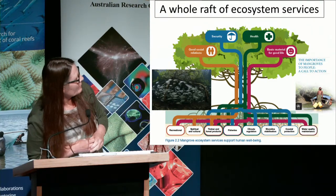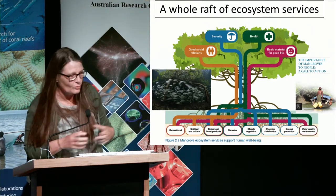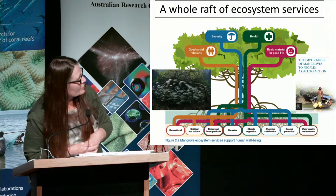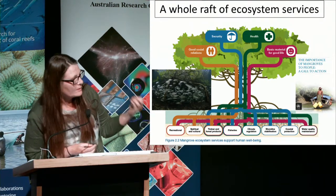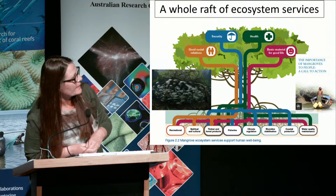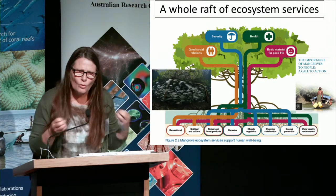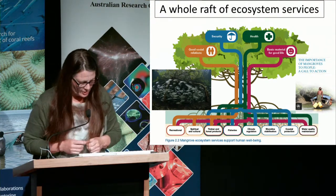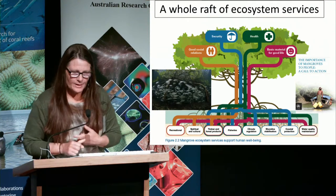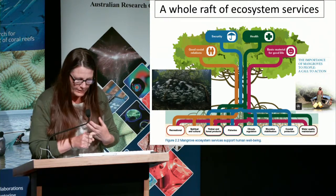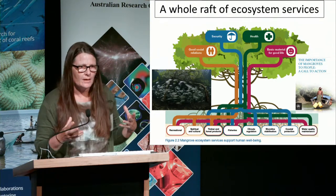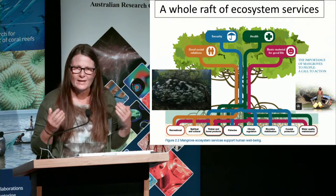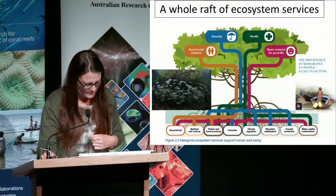A recent report outlined all the great things that mangroves and other blue carbon systems do for coastal communities — climate regulation, fisheries, coastal protection, timber and other products, recreation, and for indigenous communities, spiritual and cultural values associated with these ecosystems.